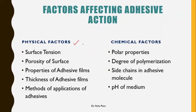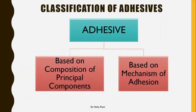Coming to the factors affecting adhesive action, there are physical factors and chemical factors. Physical factors include surface tension, porosity, properties of the film, thickness of the film, and how you are applying the adhesive. Chemical factors relate to the chemical property of the adhesive, like its polar nature, degree of polymerization, side chains, and pH of the medium.